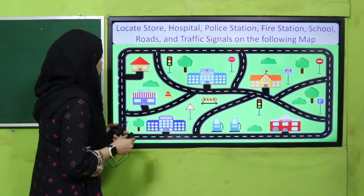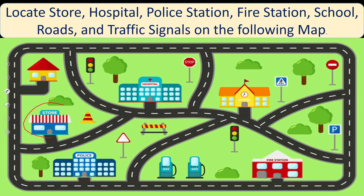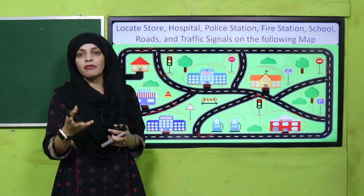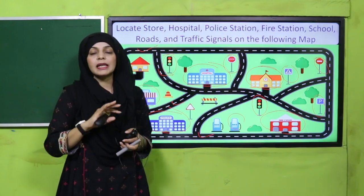First, let's locate the store. Here is the store. Then, where is the hospital? Very good. Where is the police station? Very good. Now where is the fire station — the fire station. Then here is the school. Can you locate any road? These are all the roads connecting different places. And the traffic signals — this is a traffic signal. These are all different sign boards which help keep traffic controlled.